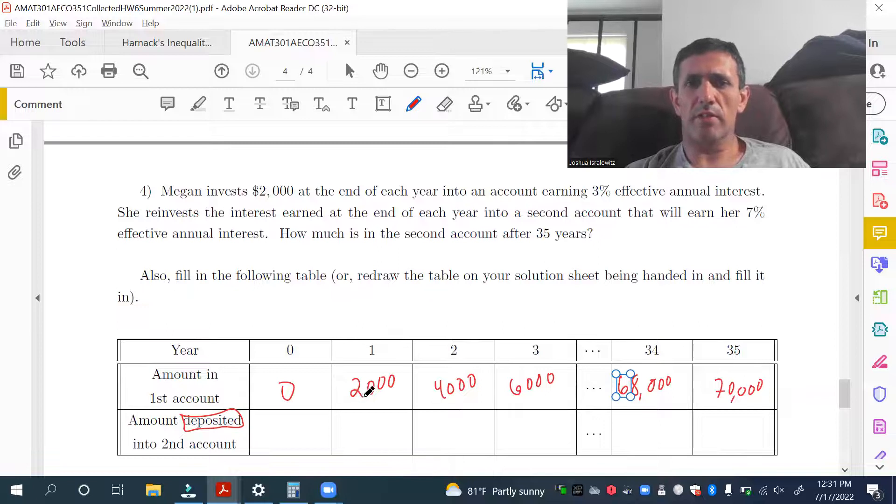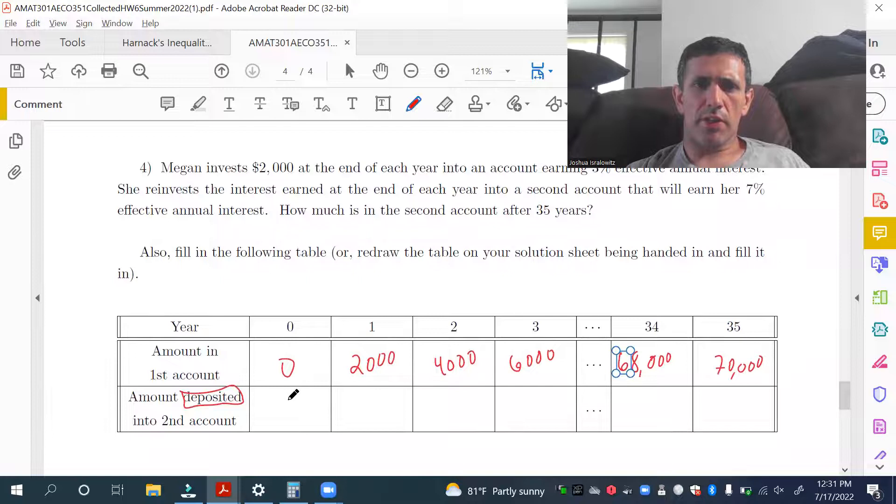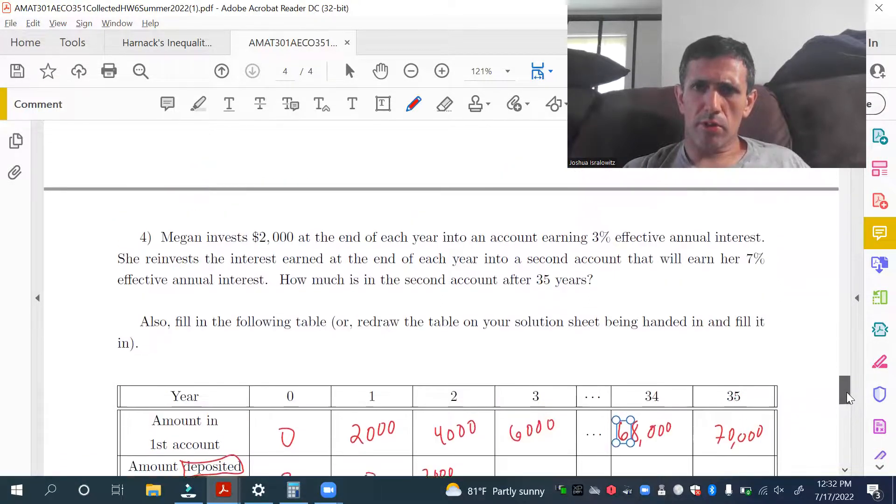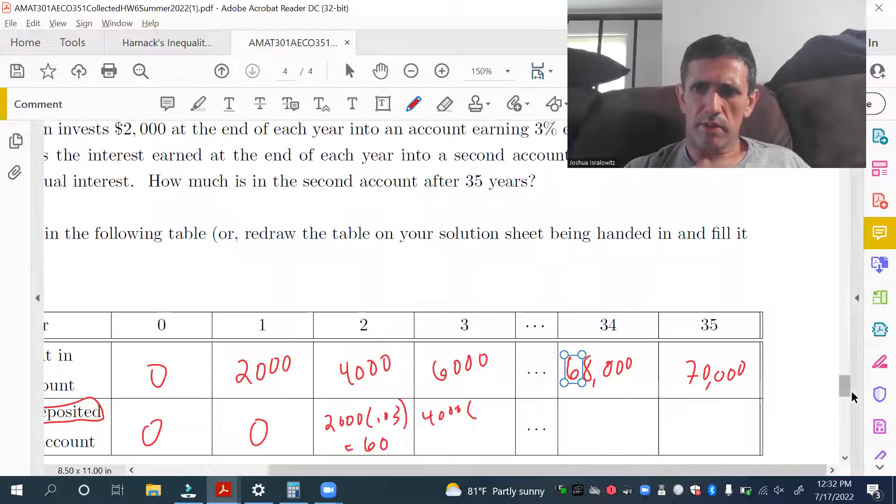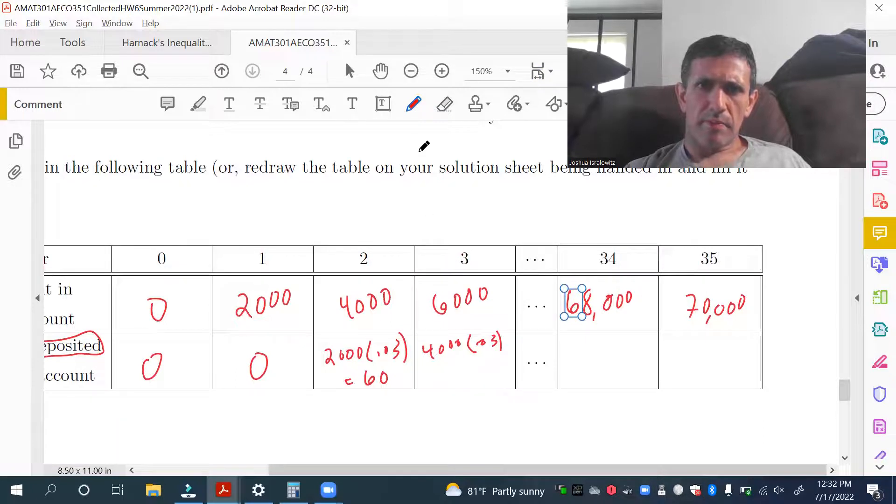So, she takes the interest and puts it in the second account, but otherwise, just keep investing $2,000. All right, so, there's nothing in the account in the first year. So, nothing gets deposited into the, at the end of the first year. There's only at the end of the second year does any interest accrue. So, it's $2,000 times 3% interest to the first account. That's $60,000. So, $4,000 bigger. Draw this better.